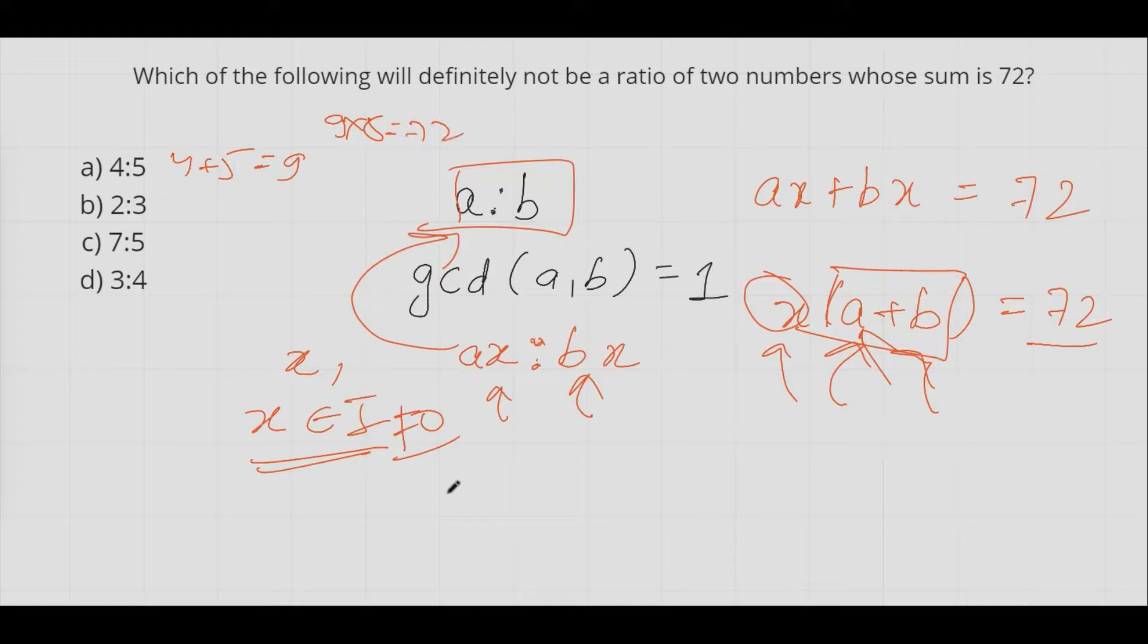Two plus three equals to five. Does five divide 72? No it does not. So two is to three is our answer.